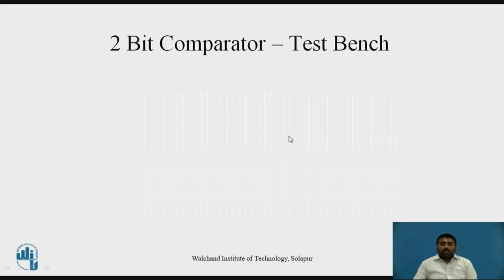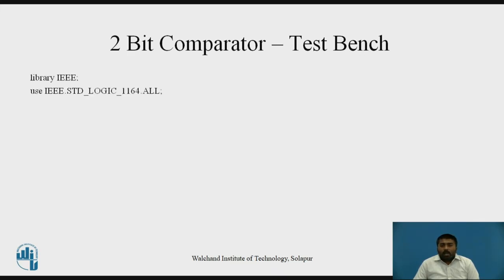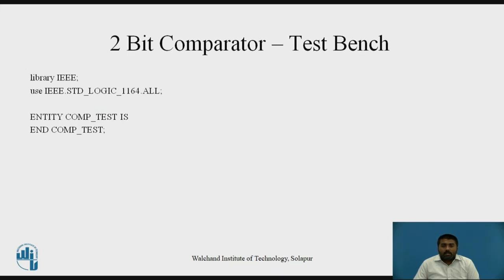Now let us go for the test bench writing for the 2-bit comparator. In test bench writing, three important parts are there: library declaration, entity part, and architecture part — same as the VHDL design code. For library declaration, you include library IEEE and mention the package. For the entity declaration, you write an empty entity — no need to write ports or signals. Just write the entity name, and end entity.